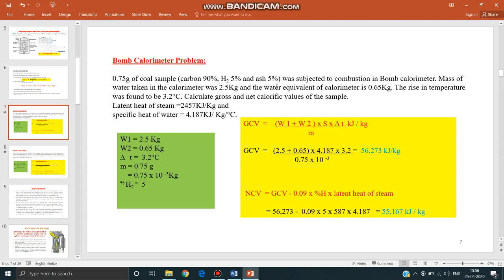The sample was subjected to combustion in bomb calorimeter. Mass of water taken in the calorimeter was 2.5 kg and the water equivalent of the calorimeter 0.65 kg. The rise in temperature was found to be 3.2°C. Calculate gross and net calorific values of the sample.